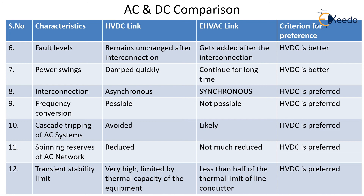Finally, for transient stability limit, HVDC has a very high transient stability limit, limited only by the thermal capacity of the equipment. In contrast, the EHVAC transient stability limit is less than half of the thermal limit of the line conductor. Across all these factors we can justify that HVDC links are comparatively better than EHVAC links.